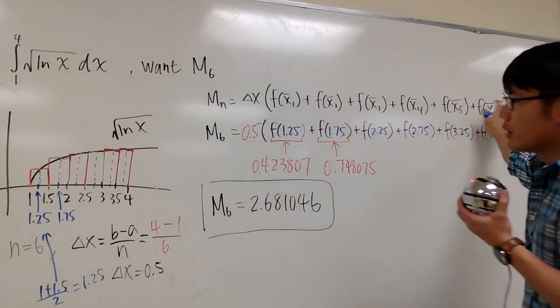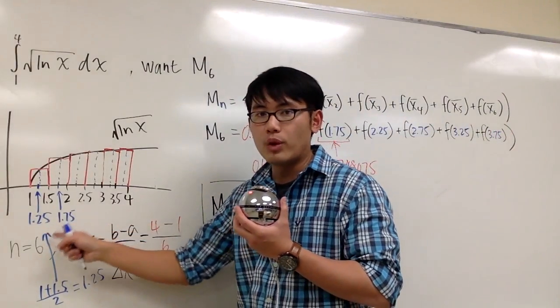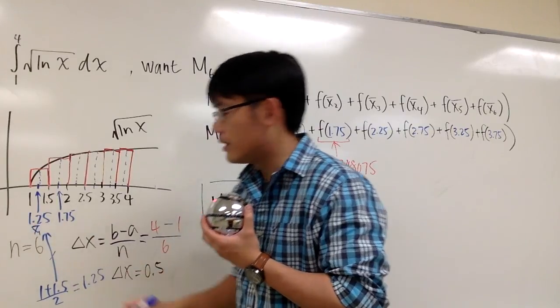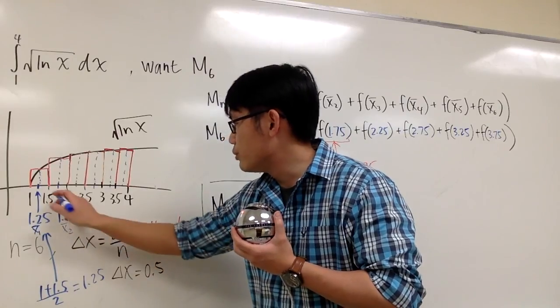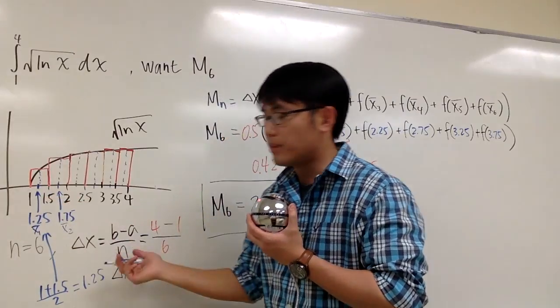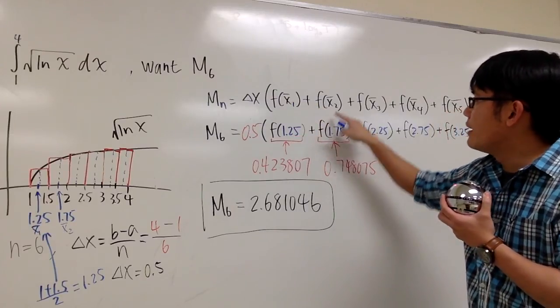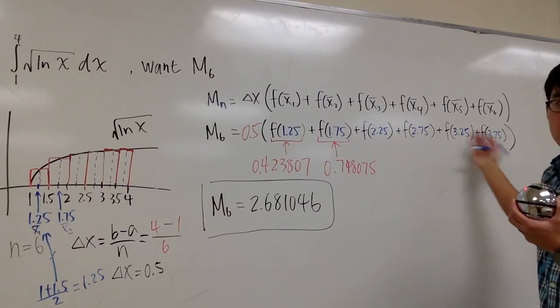And you have this formula. The x1 bar is exactly the middle number, and that's the one we found. So I can label this as x1 bar. And then the next one is x2 bar, the average in between 1.5 and 2. And you will see that x1 bar is 1.25, x2 bar is 1.75, x3 bar is 2.25, and so on, so on, so on.